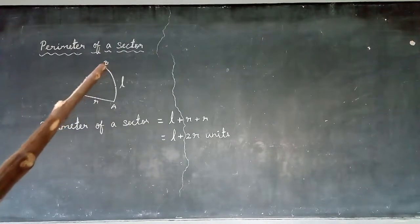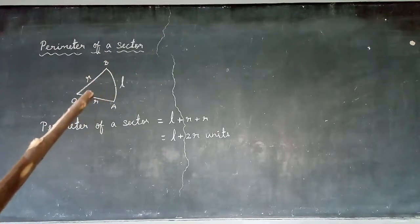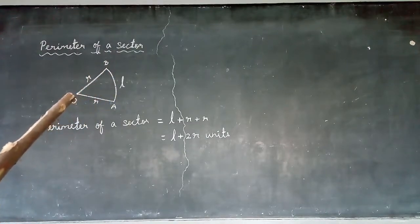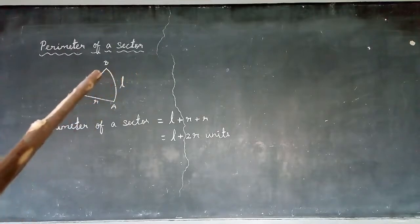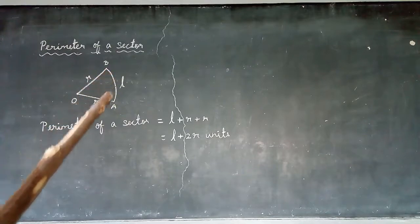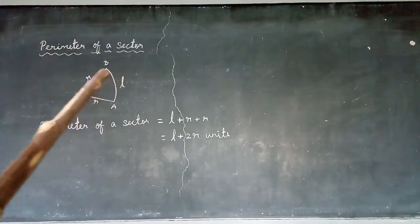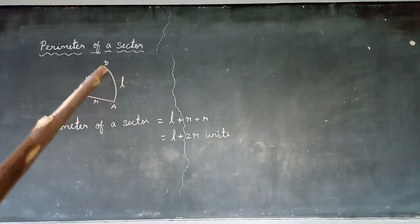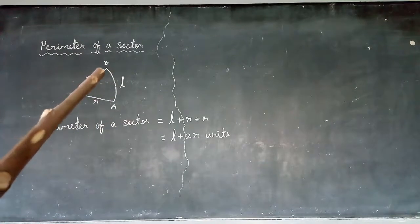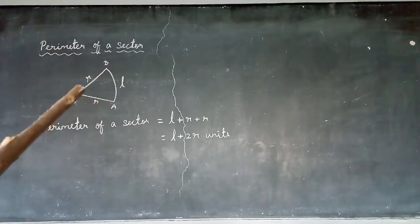A sector is a portion of a circle. It has a center point, and from the center to the points on the circle we have radii. The boundary includes an arc, which is part of the circumference of the circle. A sector has two radii.